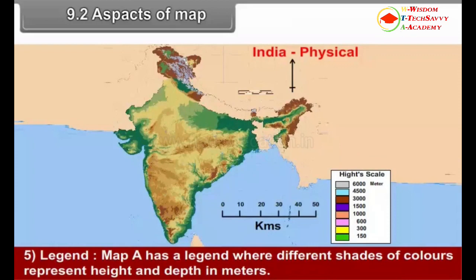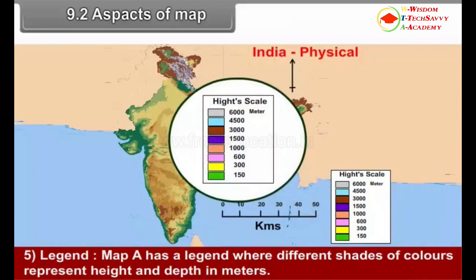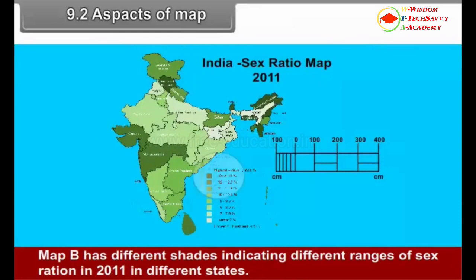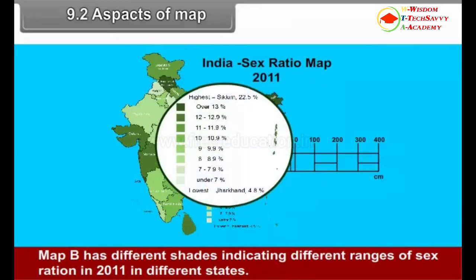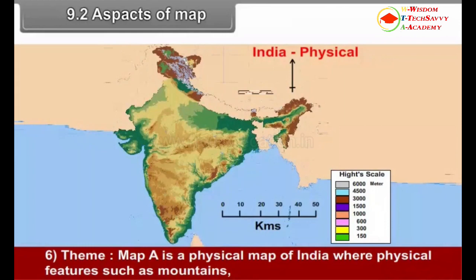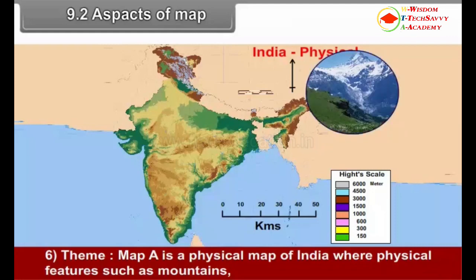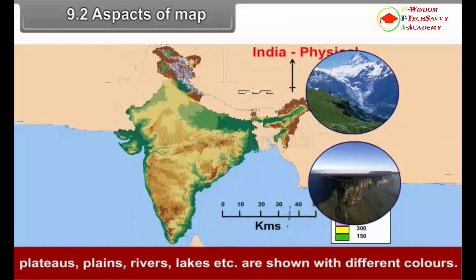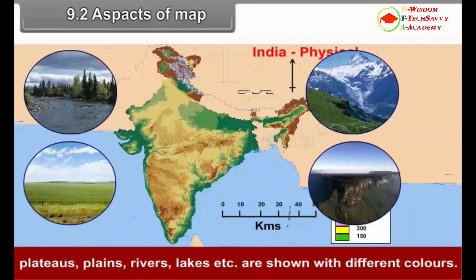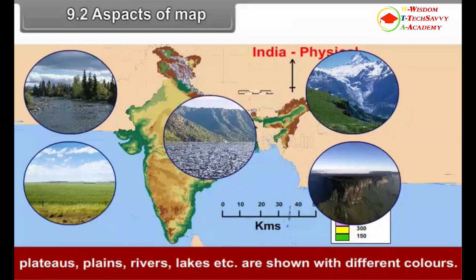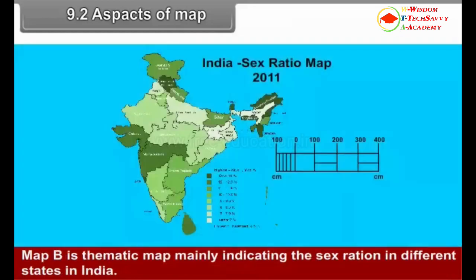Fifth, Legend: Map A has a legend where different shades of colors represent height and depth in meters. Map B has different shades indicating different ranges of sex ratio in 2011 in different states. Sixth, Theme: Map A is a physical map of India showing physical features such as mountains, plateaus, plains, rivers, and lakes with different colors. Map B is a thematic map mainly indicating the sex ratio in different states in India.